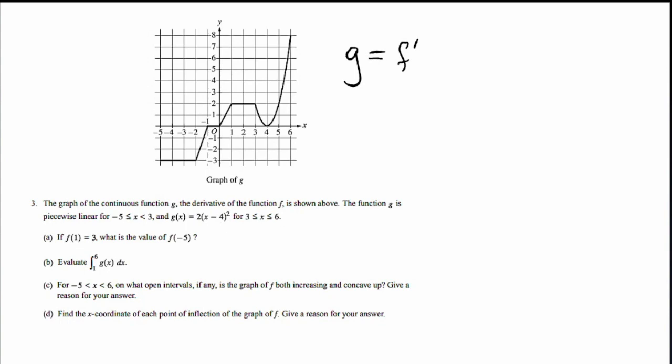If f(1) equals 3, what is the value of f(-5)? Now they're talking about f. What we're looking at is f prime. So to go from f prime to f, we need to integrate. f is the integral of g dx. And the way you integrate is you actually need two numbers to integrate, from one point to another. That's why they gave us this initial condition here. They gave us one point so that we could find the value of the other.